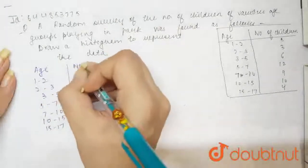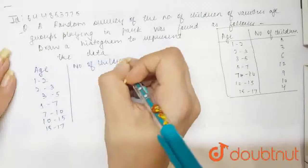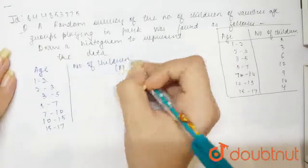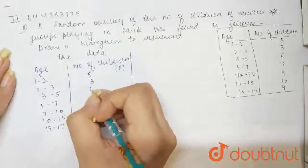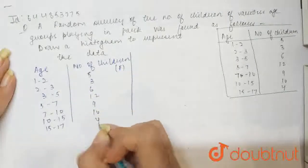After this we have number of children. So number of children basically is their frequency, right? So the frequency is 5, 3, 6, 12, 9, 10 and 4.